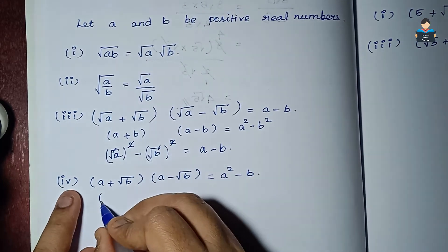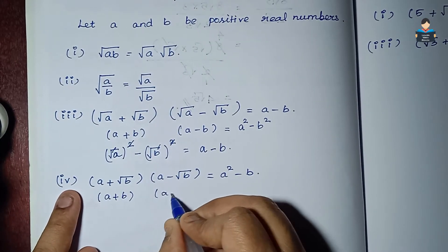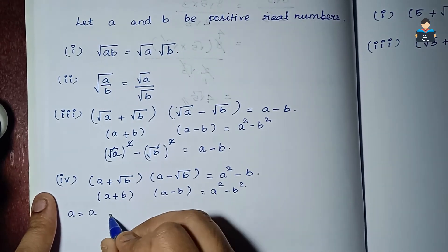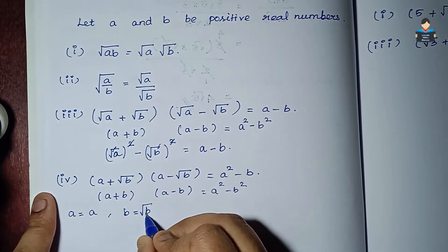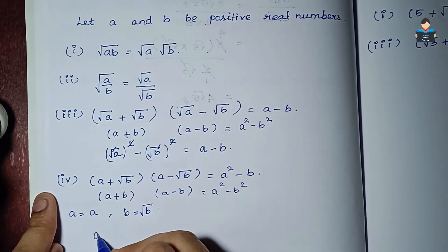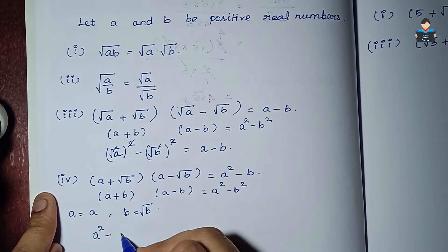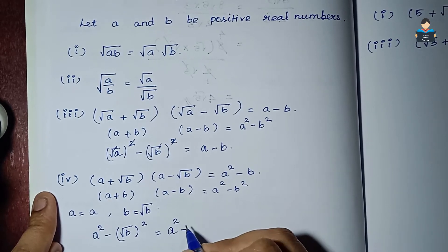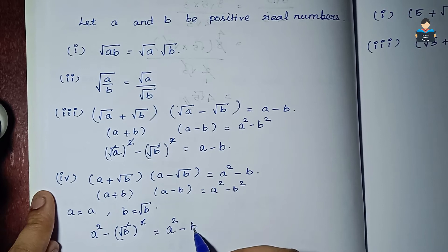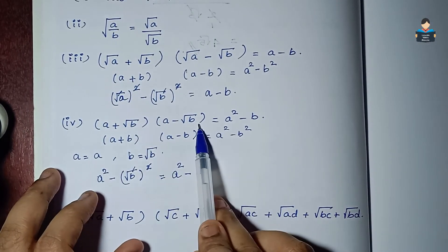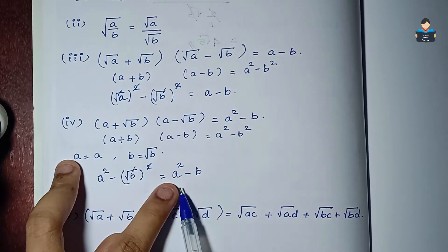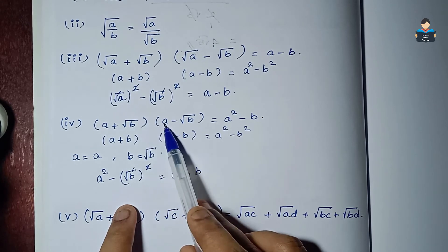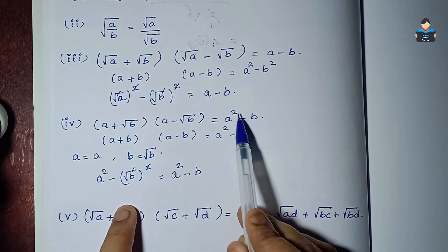This follows from the identity A² minus B² where A is √a and B is √b. So the fourth identity is: (√a + √b)(√a - √b) = a - b. The square root and square cancel each other, and the left-hand side equals the right-hand side.